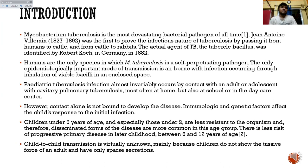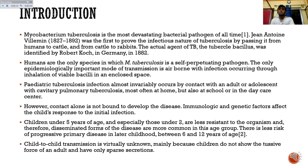In my introduction, pulmonary tuberculosis is one of the most devastating pulmonary pathologies. Epidemiologically, the significant mode of transmission is airborne, with infection occurring through inhalation. Pediatric tuberculosis occurs by contact with an adult or adolescent with cavitary pulmonary tuberculosis, most often at home or school. Contact alone is not sufficient; immunological factors are also important. In children under five years of age, disseminated forms are much more common, while child-to-child transmission is extremely rare.